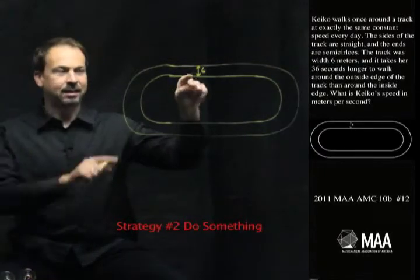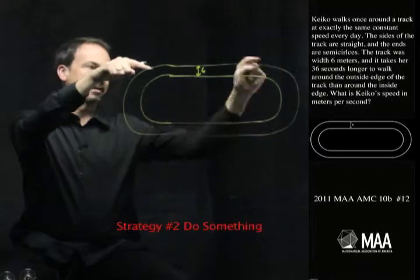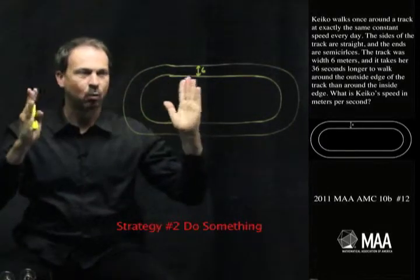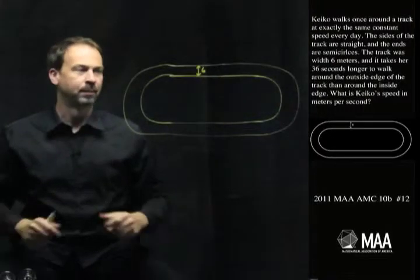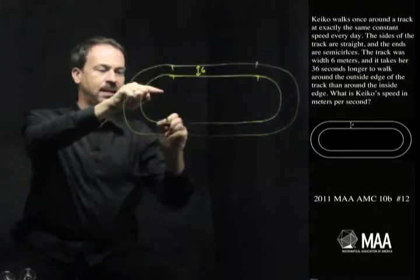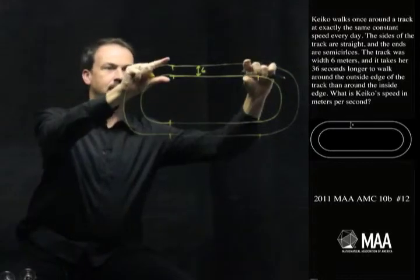So let's be clear. It does make sense that it will take her longer to walk around the outside than it would the inside. But let's be very clear. What's the difference between the outside track and the inside track in terms of the distance that she's walking? Well, clearly the straight sections on both the inside and the outside are identical.